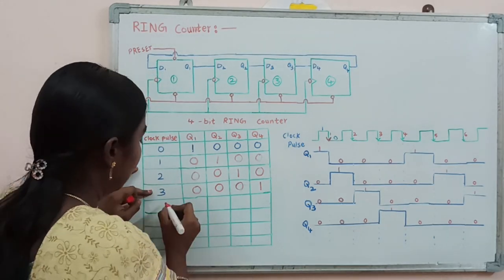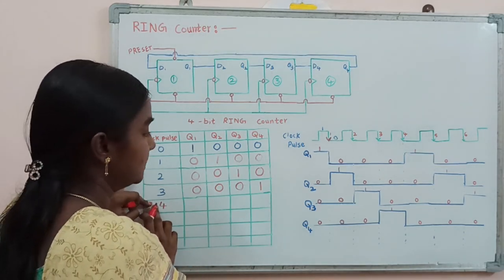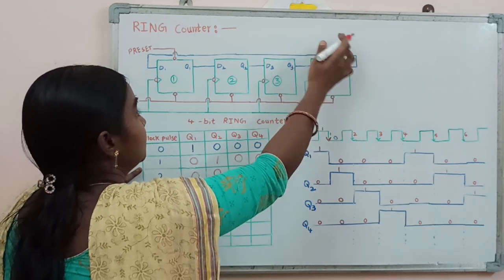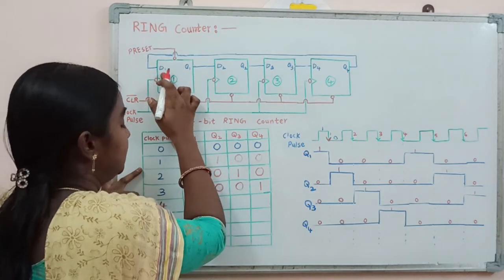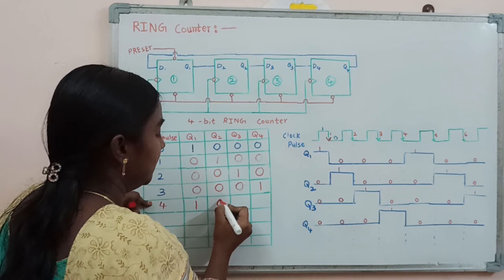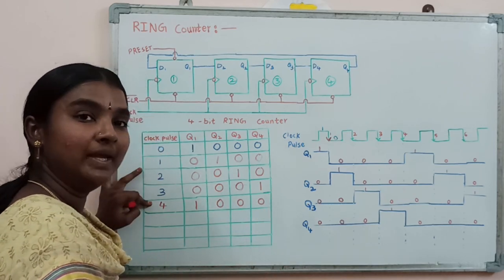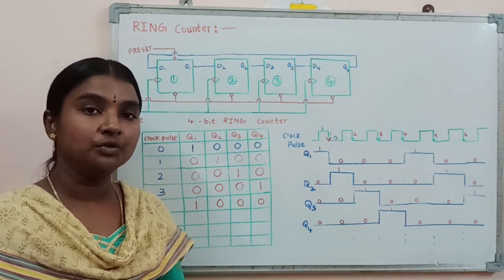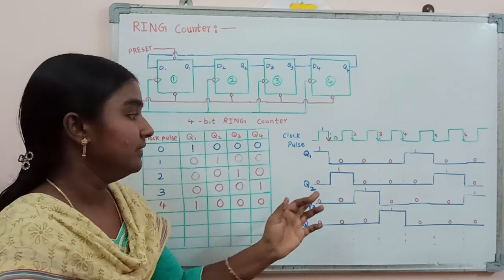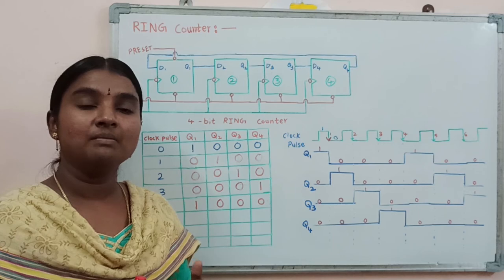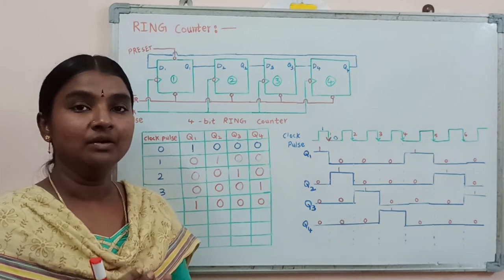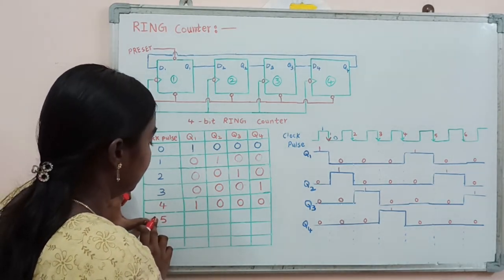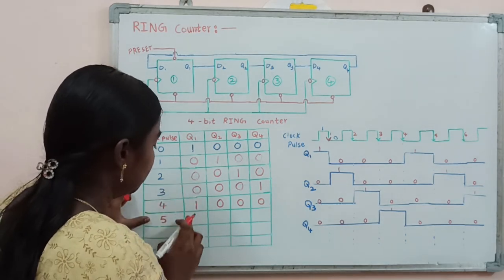After applying the fourth clock pulse, the Q4 output of 1 is fed back as input to the first flip flop, so Q1 becomes 1, and the remaining Q2, Q3, Q4 are all zero. So for a 4-bit ring counter we use 4 flip flops and the waveforms repeat every 4 clock pulses. When we apply the fifth clock pulse, the same pattern repeats from the beginning.